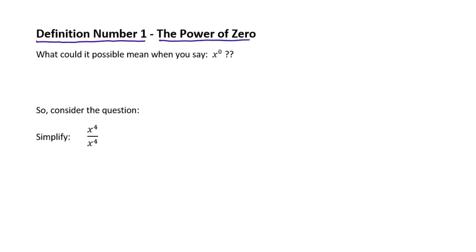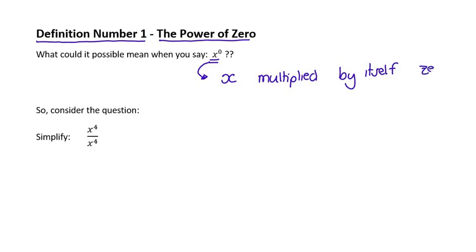So when mathematicians were busy working with exponents, and they'd made up this language of the number at the top being how many times you multiply a letter or number by itself, they got to this problem: what could it possibly mean if you said x to the power of zero? Or 2 to the power of zero? Or 8 to the power of zero? If you think about what exponents actually mean, this means x multiplied by itself no times. Because that exponent means how many times you multiply the base by itself. So that would mean x multiplied by itself zero times. Now how could you possibly write on the page x multiplied by itself zero times?